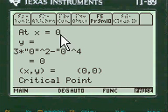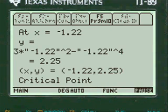The next one is zero, the critical point is zero, zero. And for the minus 1.22 the critical point is minus 1.22 and 2.25. That's the x-y value. So those are critical points.